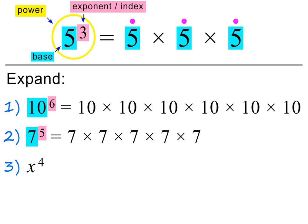In the next example, we are asked to expand x to the power of 4. The base is x, which can be any number, and the exponent is 4. So we need to multiply x by itself 4 times.